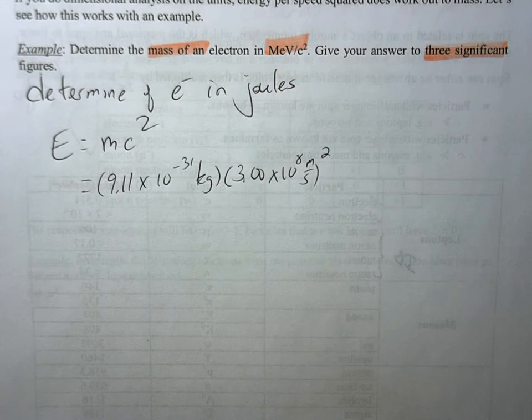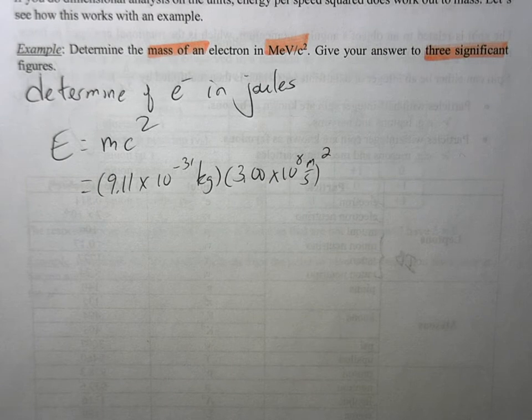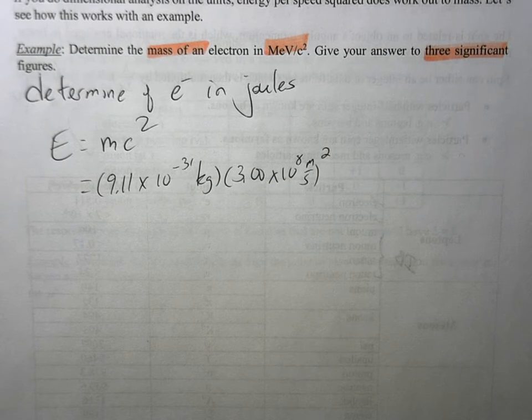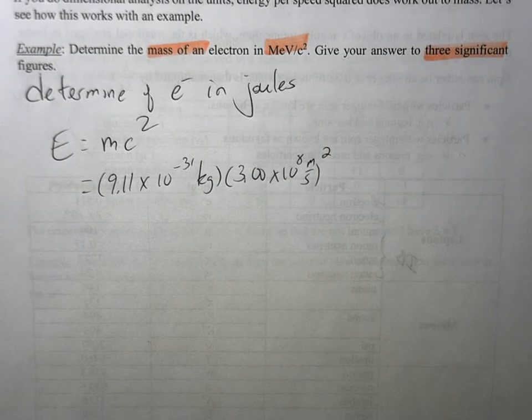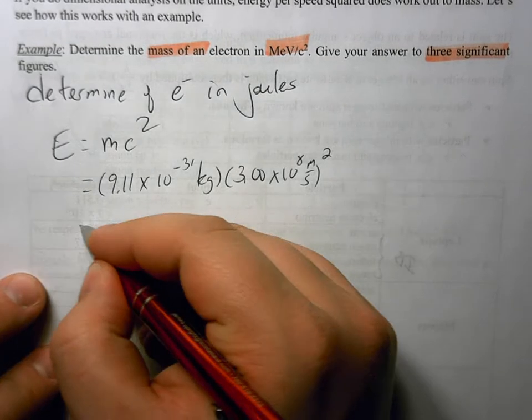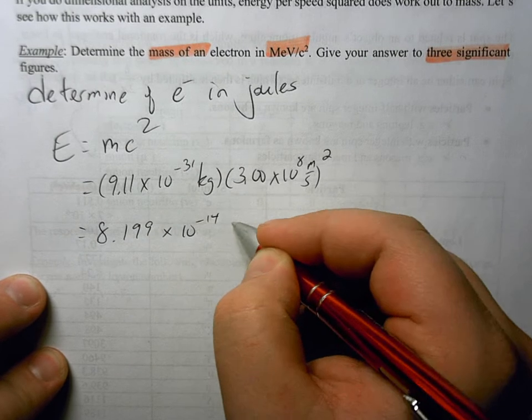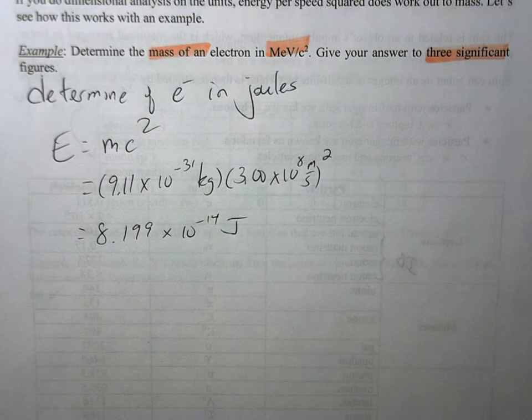And then we've got our speed of light squared. As always, don't forget the square when you're doing speed of light squared. That's a common pitfall that gets students. And every time a student falls for that, it makes me very sad. So we're going to get that the energy is about 8.199 times 10 to the minus 14 joules.